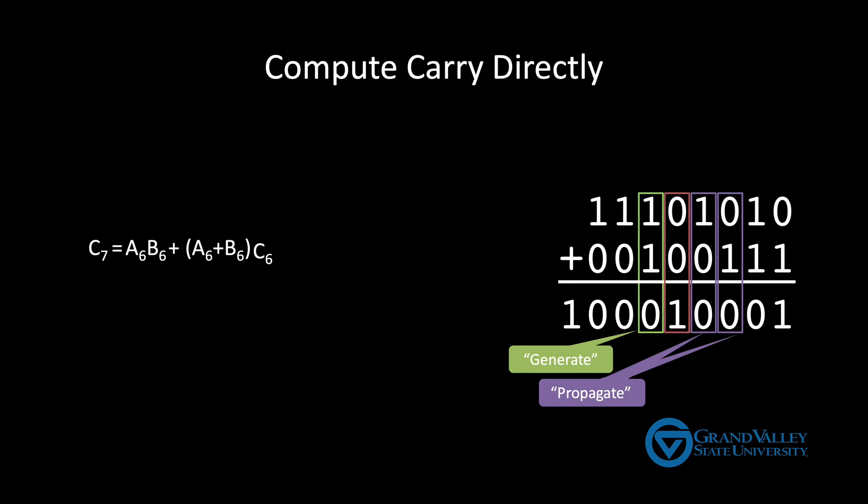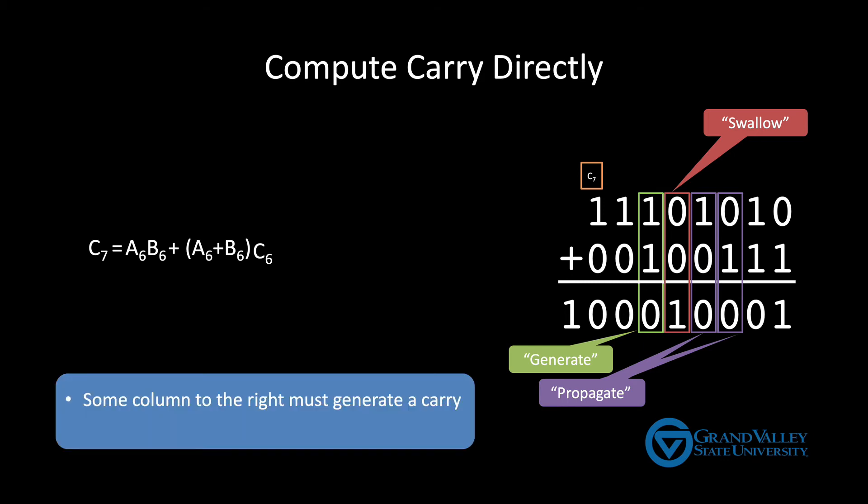Finally, if both inputs are zeros, we say that that column swallows the carry, because there'll never be a carry out, even if there's a carry in. So in this context, what must happen in order for there to be a carry into column seven? Well, at a high level, two things must happen. First, some column to the right must generate a carry, and then all of the columns between must propagate that carry.